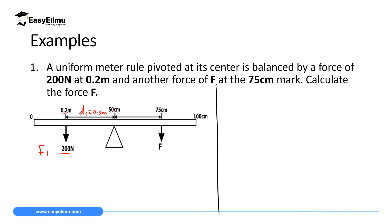The unknown force F2 acts at the 75 cm mark. Its distance from the pivot is 75 minus 50, which is 25 cm, so d2 equals 0.25 meters. To find force F, we apply the principle of moments: the sum of clockwise moments equals the sum of anticlockwise moments for a system in equilibrium.